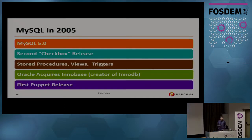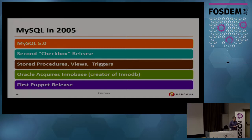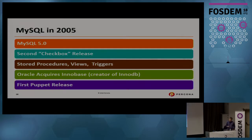In 2005 we got MySQL 5.0, which I would call the second checkbox release — it added stored procedures, triggers, and views, but these weren't very well integrated. Triggers wouldn't mix well with replication, and all that kind of stuff. But you got a lot of checkboxes, and MySQL 5.0 almost looked like an enterprise database at that point. Another important change was that Oracle acquired InnoDB — the creators of the InnoDB storage engine.